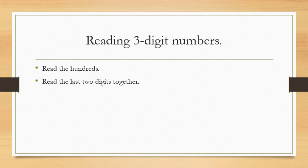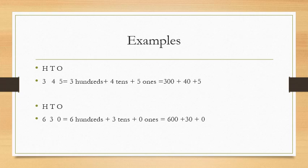Now children, let us see how you will read three-digit numbers. First, read the hundreds digit. Then read the last two digits together — that is, first read the digit at the hundreds place, then read the tens digit and ones digit together. This is the way we read three-digit numbers.